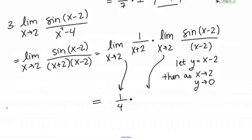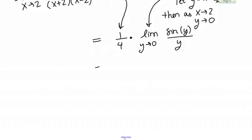Now I rewrite the second limit using my substitution. With Y's, I have the limit as Y goes to 0 of sine of Y over Y, which is exactly my special trig limit, so that equals 1. Therefore the answer is 1/4 times 1, which equals 1/4. As you can see, with a little algebraic manipulation you can use this special trig limit in a variety of situations.